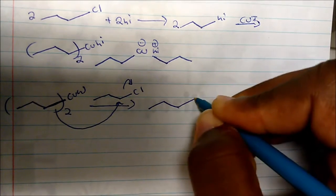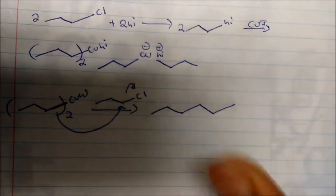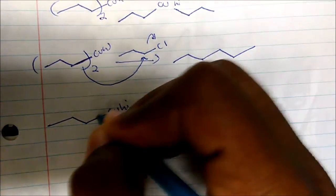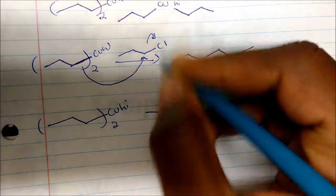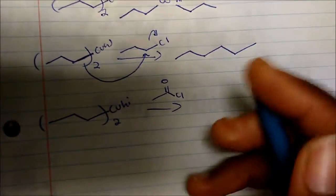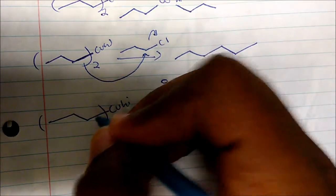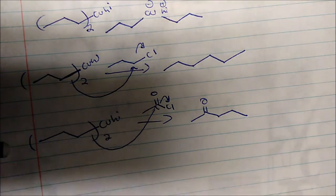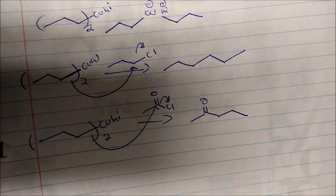We form a new carbon-carbon bond, and that is the molecule we get. The same is true with acid chlorides — if we take the same Gilman reagent and react it with acetyl chloride, the pi electrons are again very nucleophilic, attack, and displace the chlorine, forming a new ketone product.